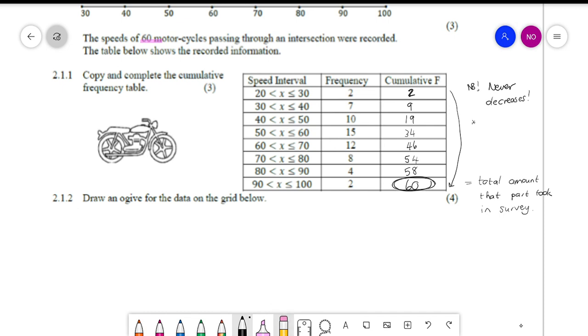So now for the next part, they say we have to draw the ogive. And they gave us a grid to draw it on, which makes it a lot easier. So the first thing I'm going to do is write down the coordinates of the values that I have to plot.